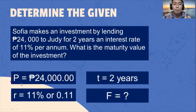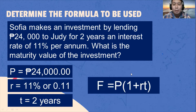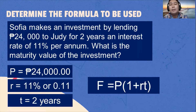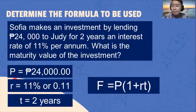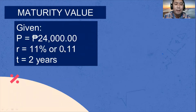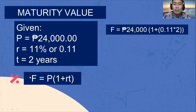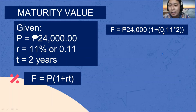Based on the given, we are going to use the formula: final value or maturity value is equal to the principal amount multiplied by the quantity of one plus the product of rate and time. Since we have the given and the formula, let's substitute: maturity value equals 24,000 multiplied by the quantity of 1 plus the quantity of 0.11 multiplied by 2.